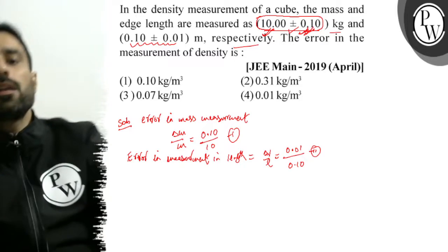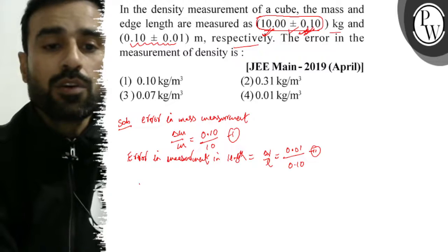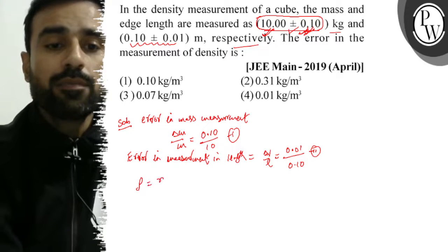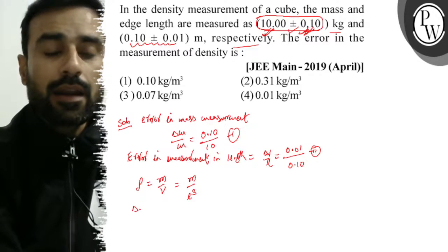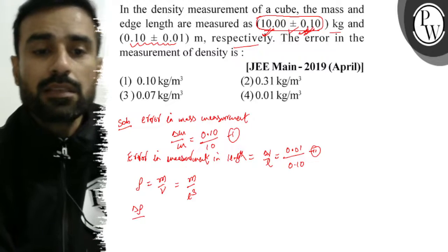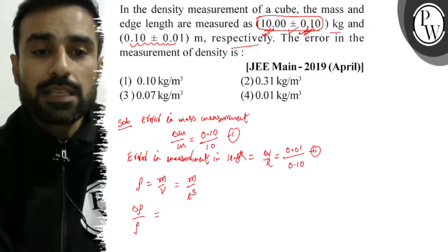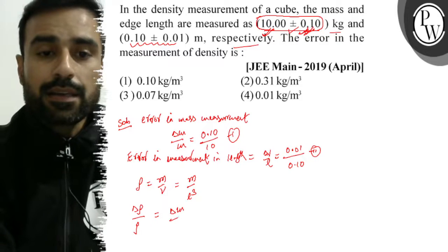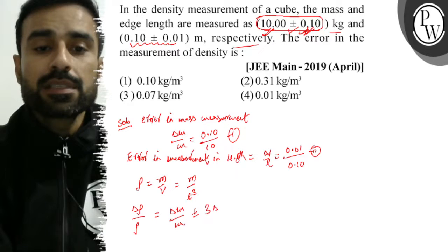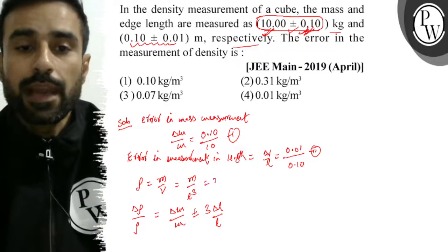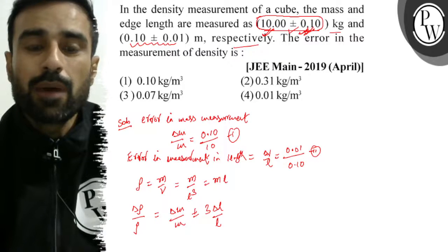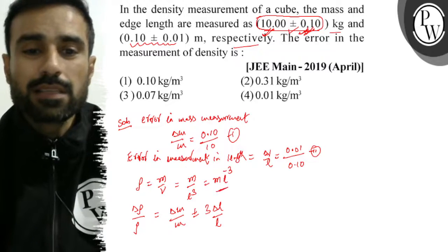Now we have to find the error in measurement of density. Of course, we know density is mass by volume, that is m by l cube. Therefore, error in measurement of density is delta rho by rho. Differentiation gives this will come as delta m by m plus or minus three times delta l by l. We can write this as m times l to the power minus three.